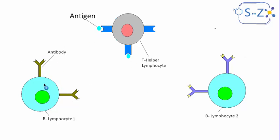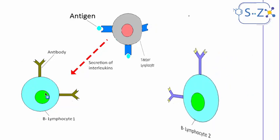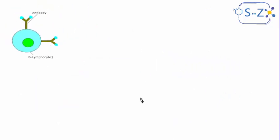but they differ by the binding site. So obviously here this B lymphocyte has a specific antibody for the antigen. That's why the T helper lymphocyte will activate B lymphocyte 1 through secretion of chemicals or cytokines called interleukins. Now this B lymphocyte is activated.